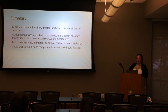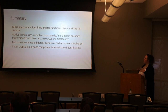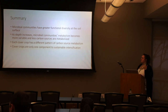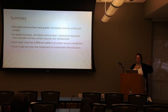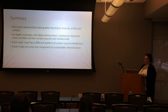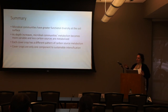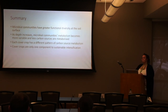To summarize: microbial communities have greater functional diversity at the soil surface than deeper in the soil profile, and as depth increases, metabolism of different carbon sources becomes more variable with fewer sources able to be utilized. We also saw that each cover crop has a different pattern of carbon source metabolism — while we didn't see as many differences in the functional diversity components, the overall pattern of carbon source utilization shows cover crops are uniquely impacting their microbial communities. Cover crops can really only be one component of sustainable intensification, and some of the challenges we encountered show how difficult implementing this can be.